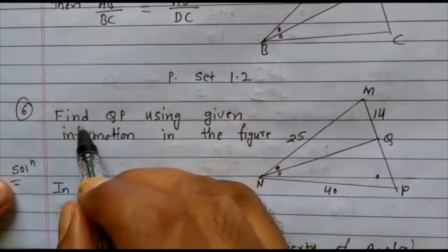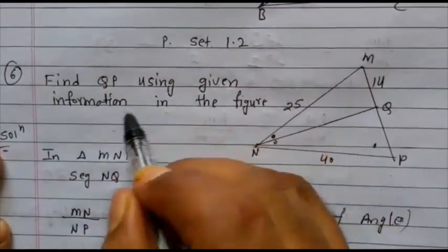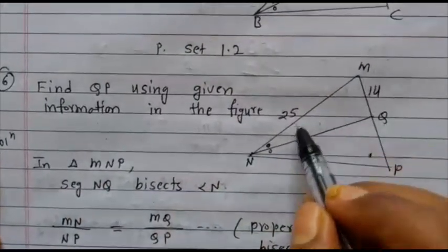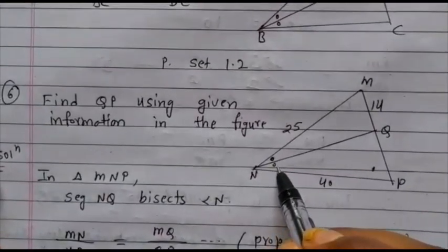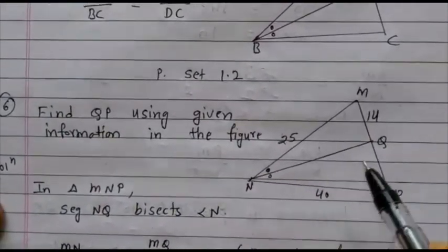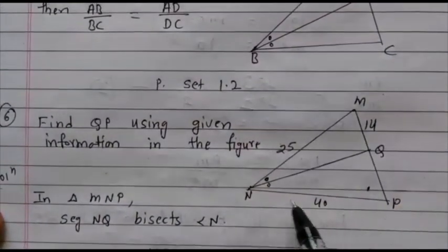What is given here? Find QP using given information in the figure. Now, look at the figure. First, see this diagram. Here it is given that the angle is bisected. Now, in triangle MNP.